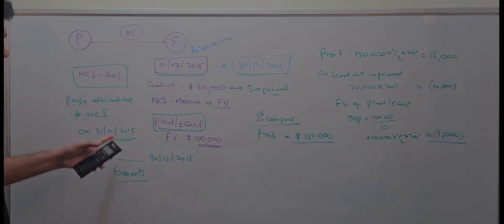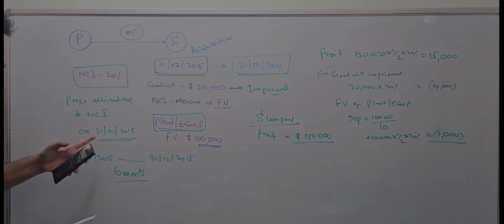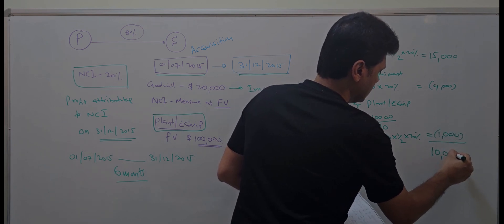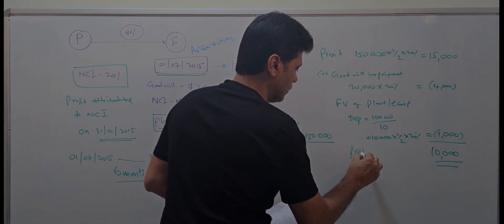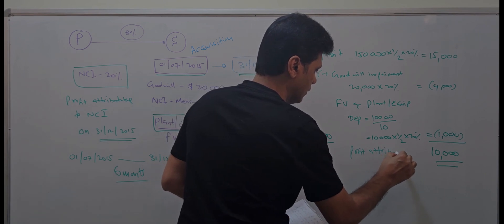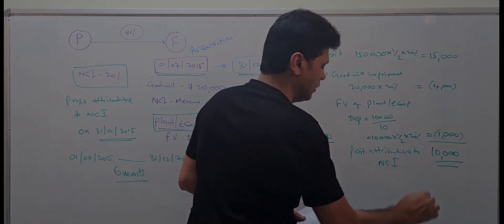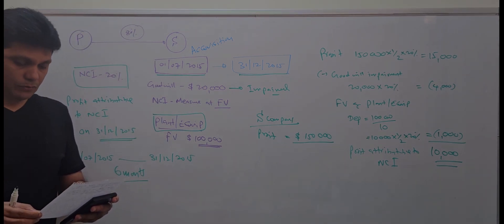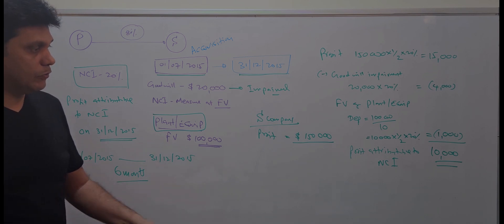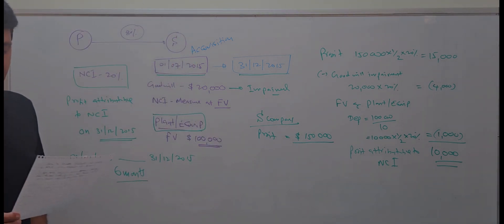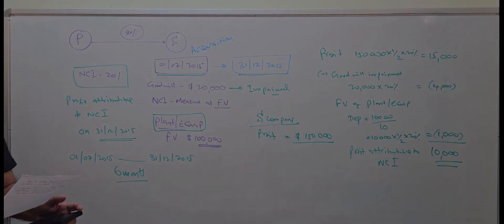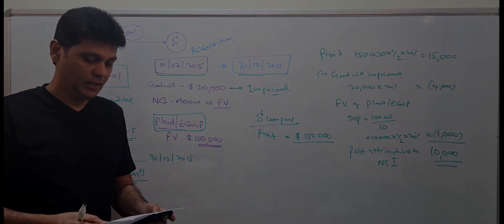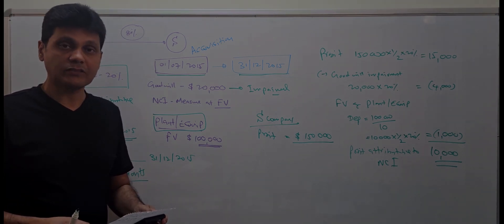The total profit attributable to the non-controlling interest on 31st December 2015 is: 15,000 minus 4,000 (goodwill impairment) minus 1,000 (fair value depreciation) equals 10,000 US dollars. This is the profit attributable to NCI that will be recorded in the P Group's profit for the year ended 31st December 2015. Thanks for watching.